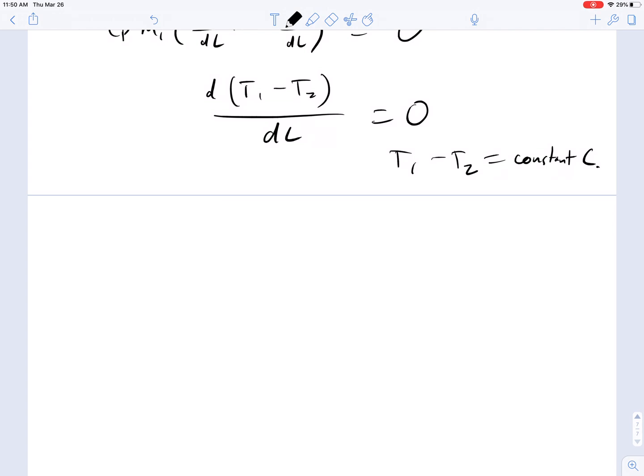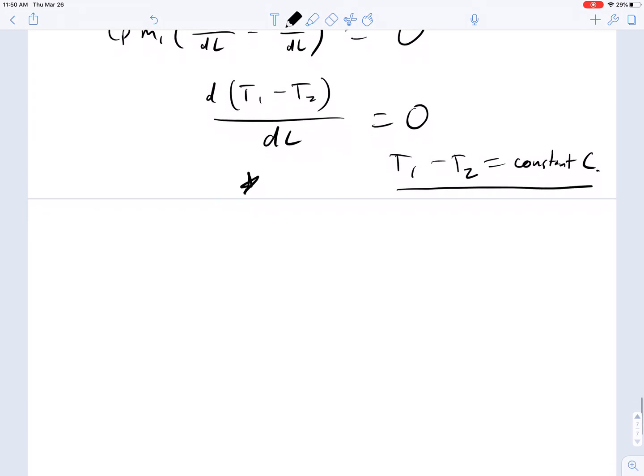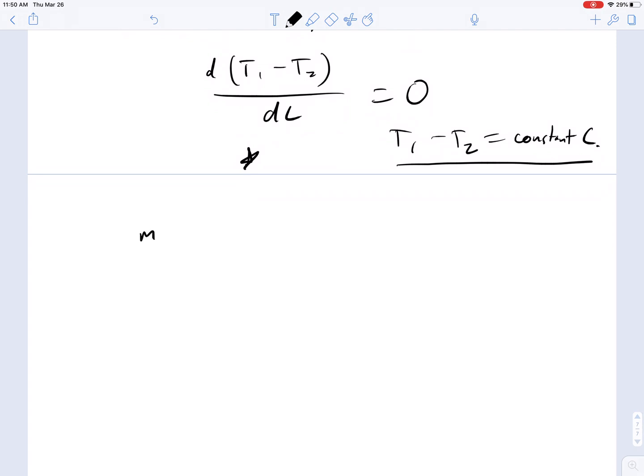Let's see what happens when we put this in. Let's make this substitution into equation star. So equation star becomes M1CP DT1/DL equals K times T2 minus T1, which is going to be equal to some minus constant. Since T1 minus T2 equals C, T2 minus T1 equals minus C, so this equals K times minus C, using the fact that T1 minus T2 equals a constant. So M1 CP1 DT1/DL equals minus K times C.